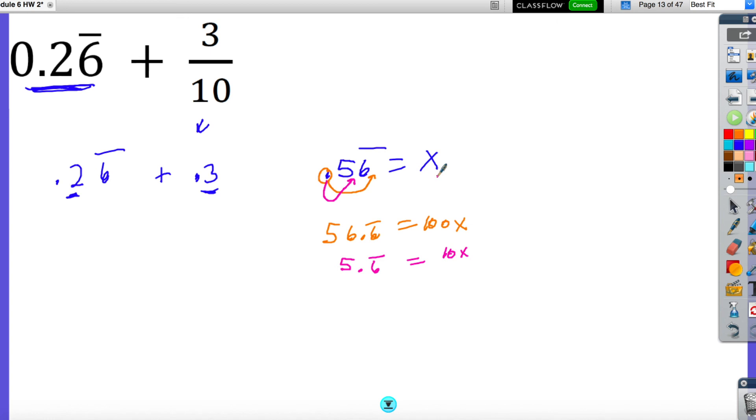Now when I do this, I will subtract these two equations. I will have 51 is equal to 90x. So then I'm just going to divide both sides by 90 to get x is equal to 51 over 90.